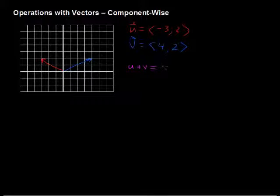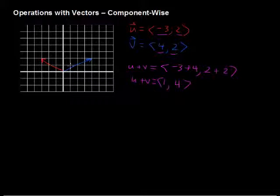Component-wise, or algebraically, we can look at it like this. We will add the -3 and the 4, these first components, and then we'll add these second components, 2 plus 2. So u + v then becomes <1, 4>. Those are the components of the vector, and we could draw that resulting vector u + v.